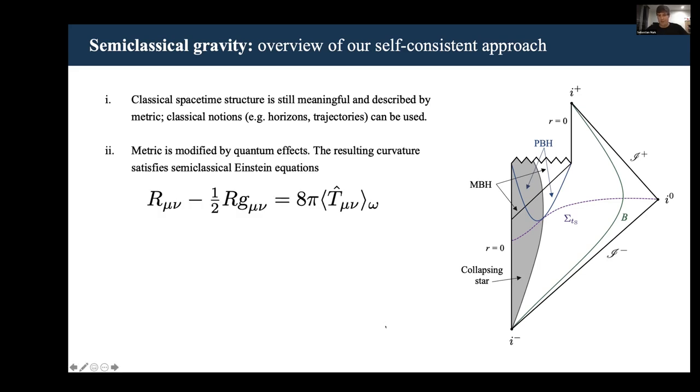Secondly, we assume that the metric is modified by quantum effects, and the resulting curvature is encoded in the semiclassical Einstein equations, where instead of the standard energy momentum tensor of classical GR, one considers the expectation value of the renormalized energy momentum tensor in some quantum state omega.